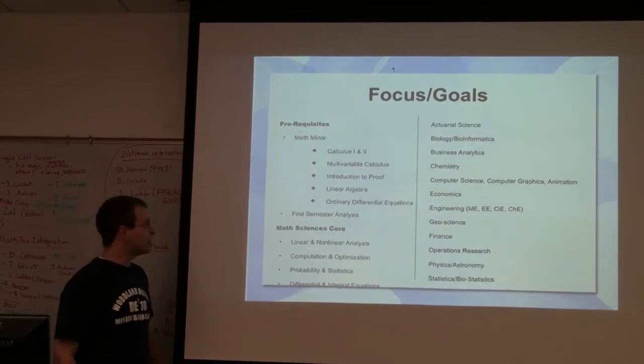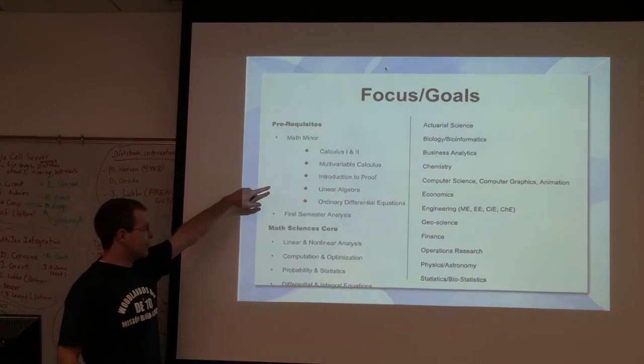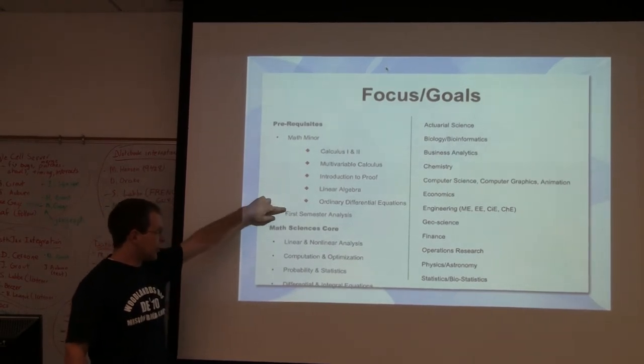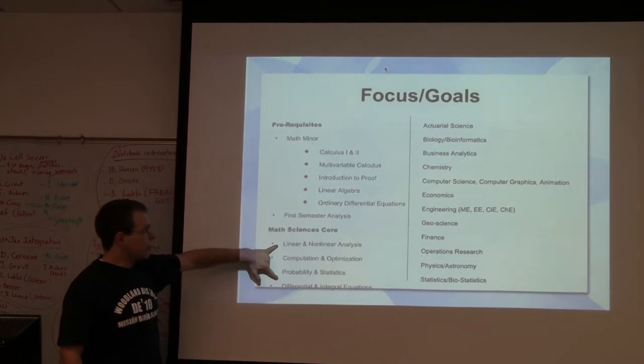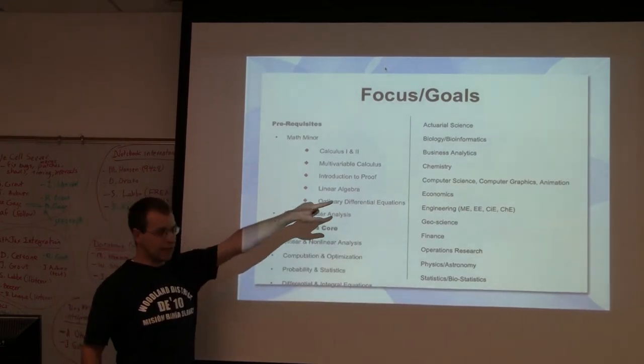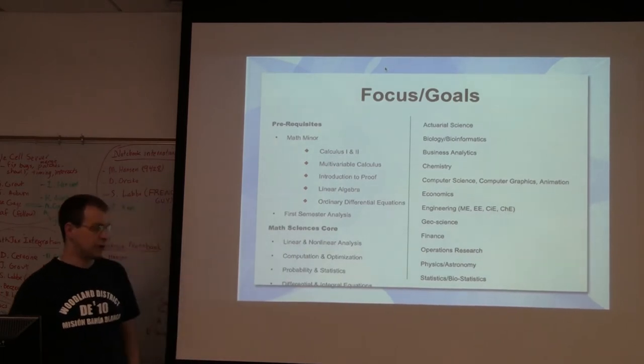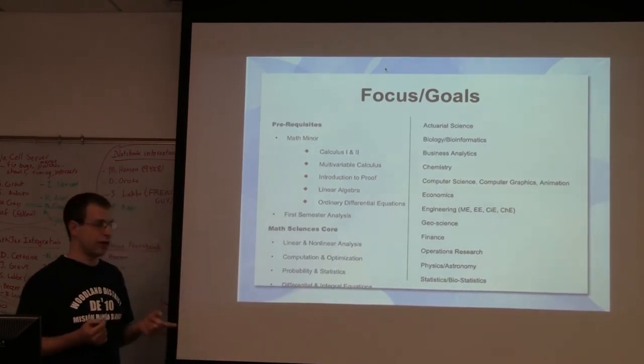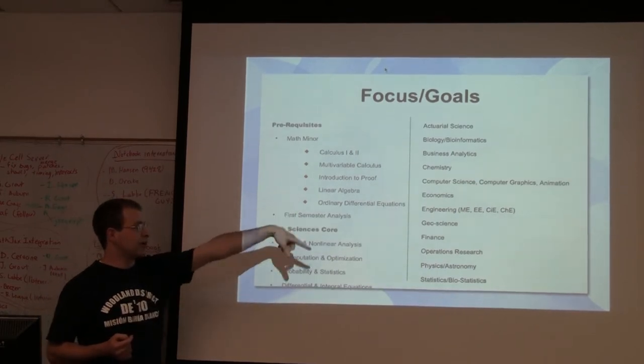So in the major, we at least have a math minor. And these classes are prereqs. And then you end up studying these and then picking an area of emphasis in one of those areas. It could be a major in that area and a minor in math, or it could be a major in math and a minor in one of those areas.